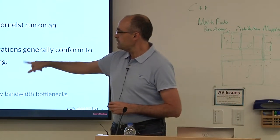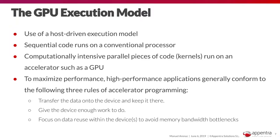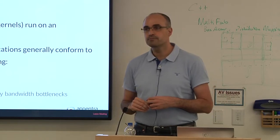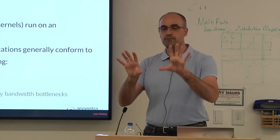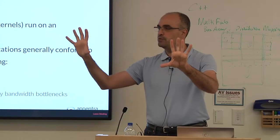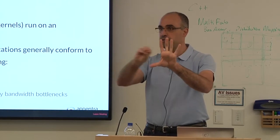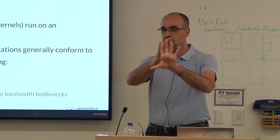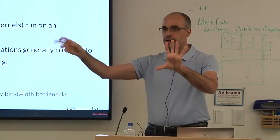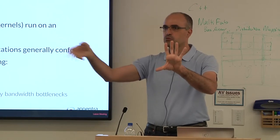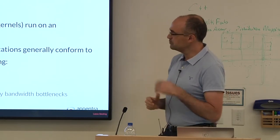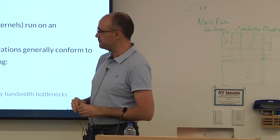Once you have identified the hot spots, keep in mind three guidelines. First: transfer data to the device and keep it there. Transferring data from CPU memory to GPU memory is the most computationally expensive part of your GPU-accelerated code — minimize it. If you transfer data, leave it there and don't transfer it back. Minimize data transfer and leave data on the device if possible.